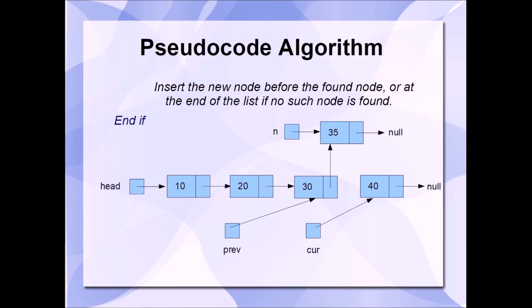Once we've done that, we need to set our new node's next pointer to our curr node. So, what that means is that we need to set N next to curr. Once we've done that, our node has been successfully inserted into the list, maintaining our ascending order. We go from 10 to 20 to 30 to 35 to 40.